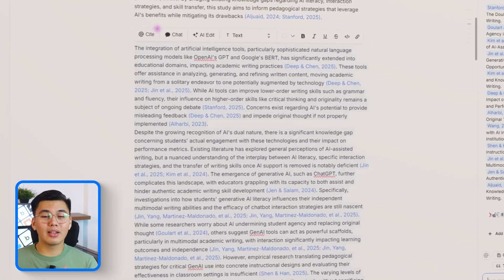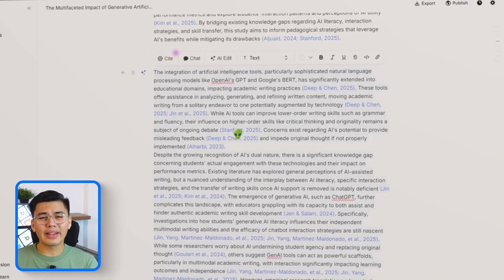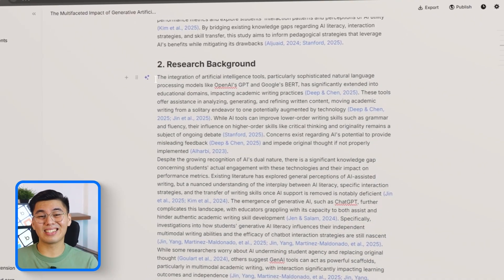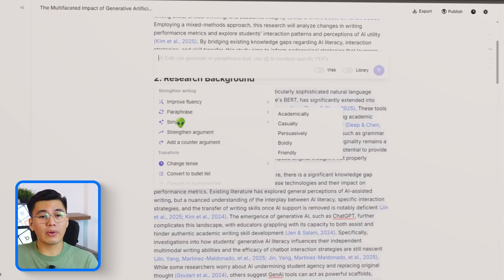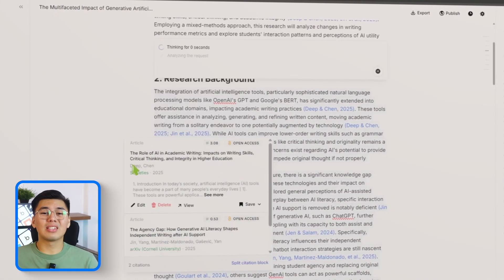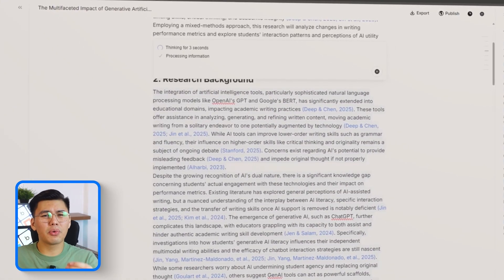I'll highlight the entire section and use Jenny's enhancement tools to build it out. Jenny is now expanding the discussion, adding missing context, and strengthening the explanation of the existing research so the background feels more complete. You'll see the section gain more depth and a clearer academic tone,